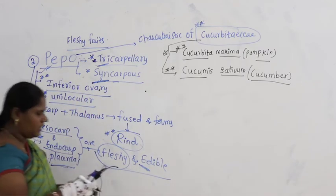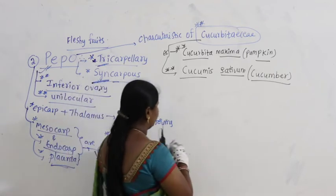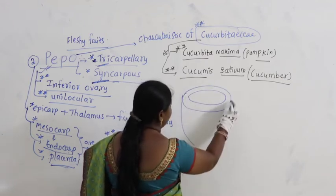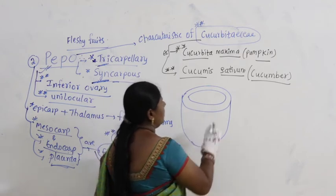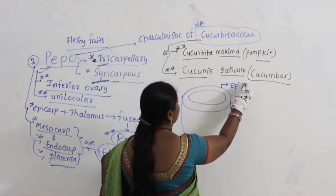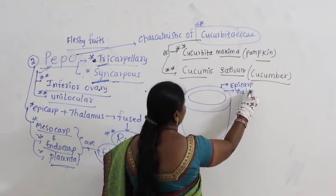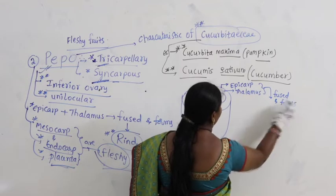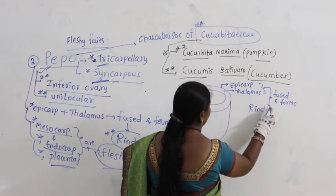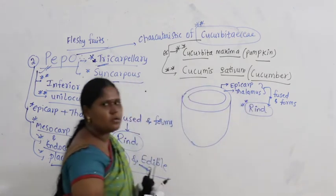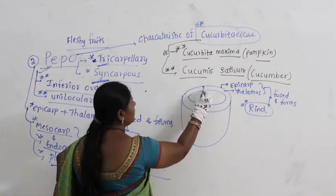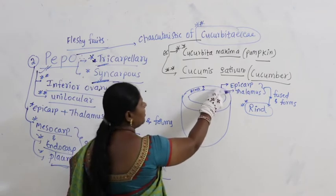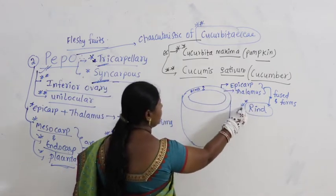Now let us see the pepo diagram. Here, epicarp and thalamus are fused and form the rind. In the center you find placenta, mesocarp, and seeds.